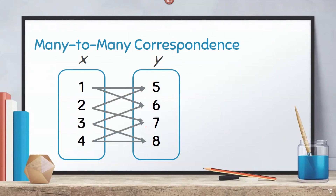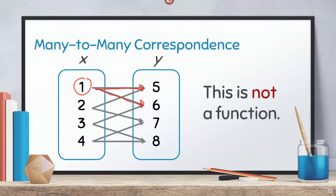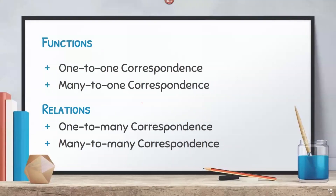Finally, in many-to-many correspondence, it is quite obvious that this is not a function. Because looking at the value of 1, it is being paired with 5 and also being paired with 6. Therefore, this correspondence is not a function. Among the correspondences, the functions are 1-to-1 and many-to-1. The other two are merely relations.